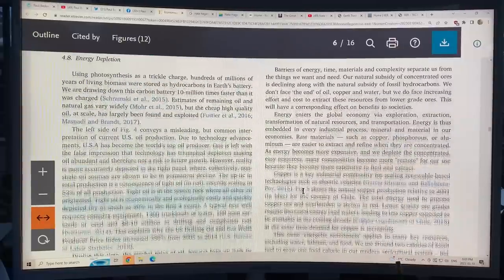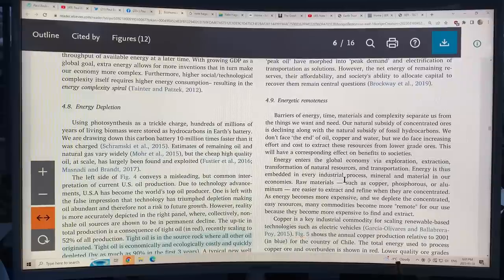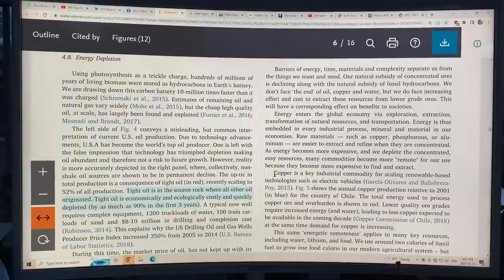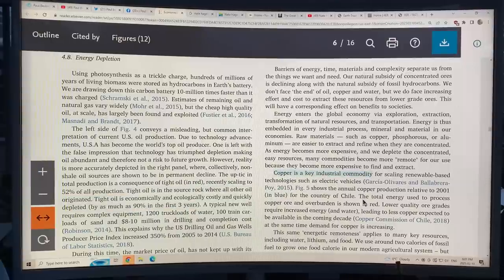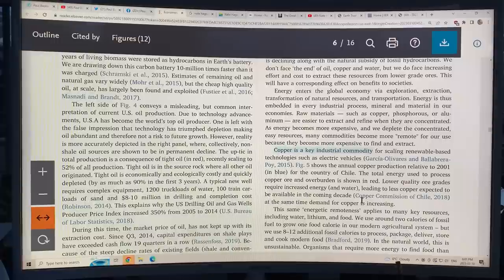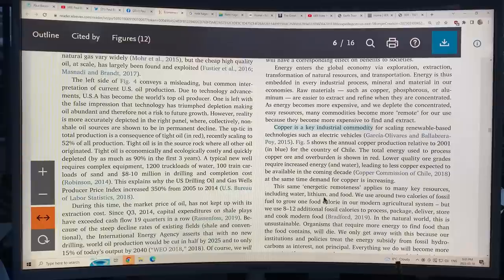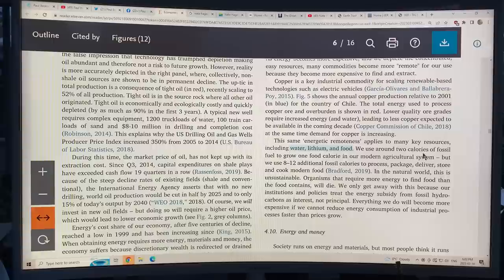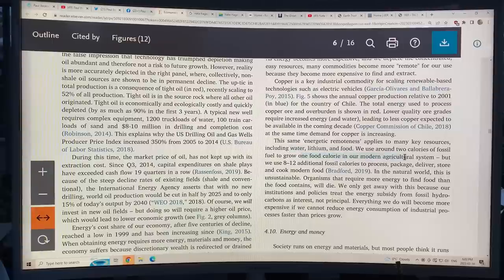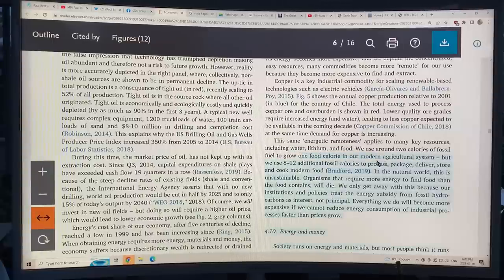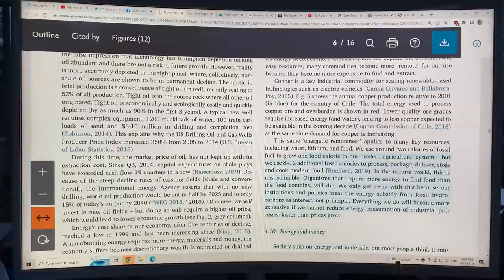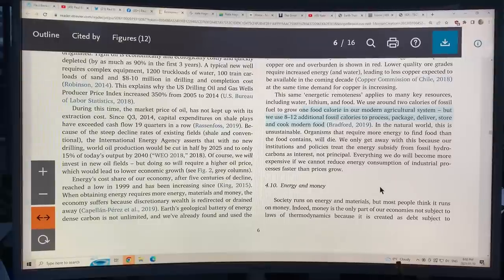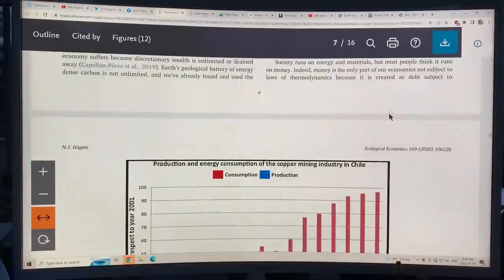So it's becoming harder and harder, but we're drilling more and more holes based on credit. And it's not just energy, but it's the commodities like copper is a key industrial commodity. Chile is one of the big producers of copper and more and more energy gets put in and you get less and less out. There's also water, lithium, and food. We use about two calories of fossil fuel to grow one food calorie in our modern agricultural system, but we use eight to 12 additional calories to process, package, deliver, restore, and cook modern food. So we're eating fossil fuels basically as well. That's not sustainable. And then it goes into, so this is Chile. This is more and more energy consumption, and this is the production of copper over the years.